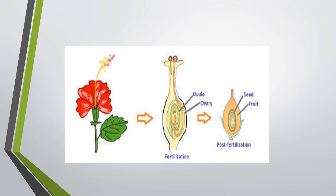Here you can see a diagram of a hibiscus plant. You can see a hibiscus flower here. This illustrates the process: the stigma, style, and ovary are shown. The pollen grain enters the ovary, and the ovule part is now converted into seed while the ovary gets converted into fruit.